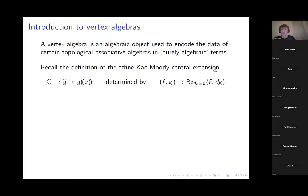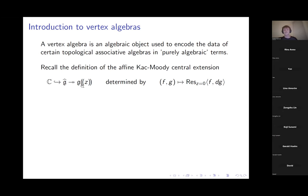Let me recall the definition of the affine Kac-Moody central extension. If you have a reasonable finite-dimensional Lie algebra g, you can consider the Lie algebra given by tensoring it with formal Laurent series in a variable z. There's a natural central extension of that Lie algebra, denoted ĝ, determined by a cocycle: take two g-valued Laurent series, apply the formal de Rham differential in z to one, use a pairing on the algebra, and take the residue at z = 0.